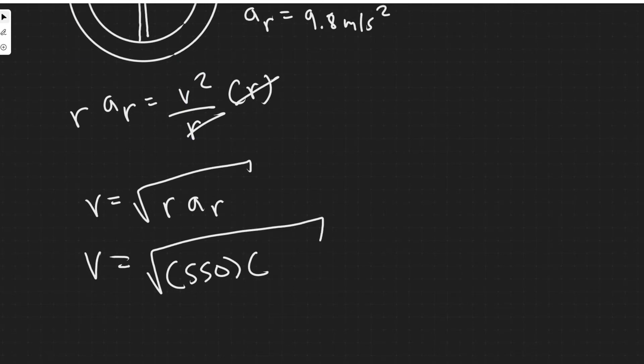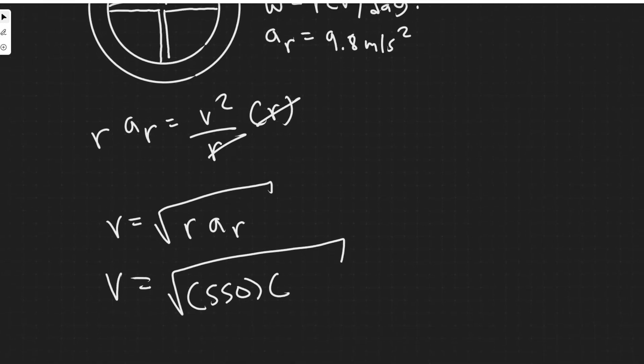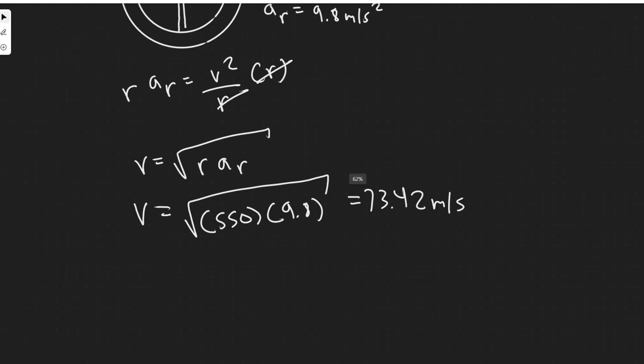Going ahead and plugging this in, 550. And then we're multiplying by a sub r, which is going to be 9.8. So let me go ahead and plug this in. So we have the square root of 550 times 9.8. So 73.41. I'll just say 73.42 since it's 4166. So 73.42, units are meters per second since we're dealing with velocity here.